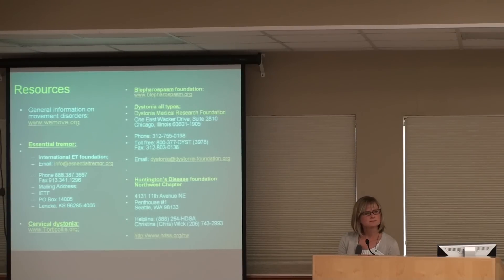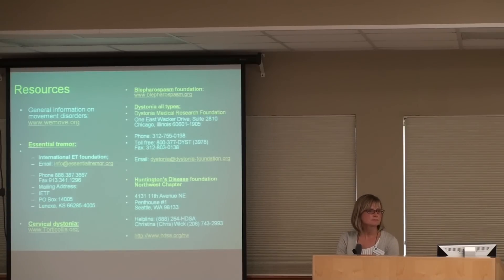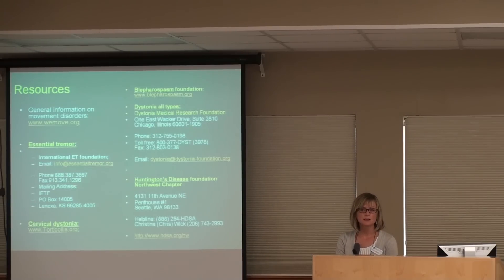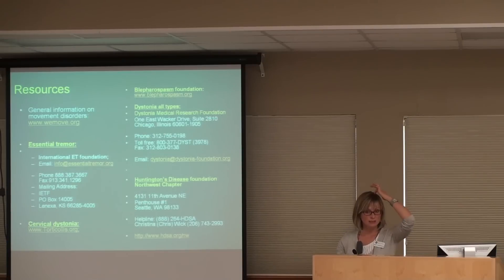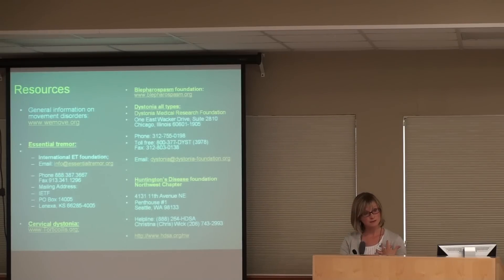If a person has had deep brain stimulation surgery affecting one side, can they be a candidate for the other type of surgery on the other side? Yes, it can be done on both sides, though sometimes it's just one. For example, if someone had a bad tremor in their right hand and had a stimulator placed on the left side of their brain years ago that controlled that hand, but now their left hand is worse, they could get either deep brain stimulation or gamma knife on the other side.